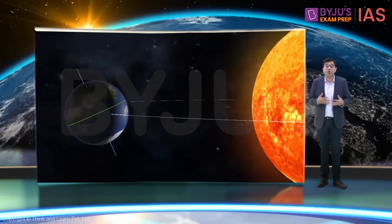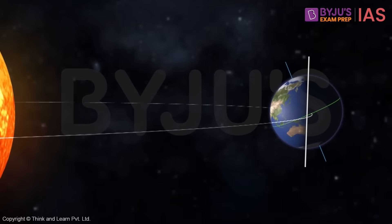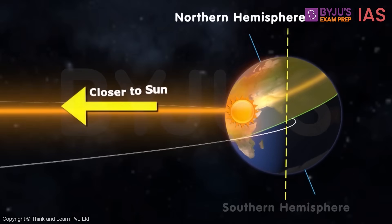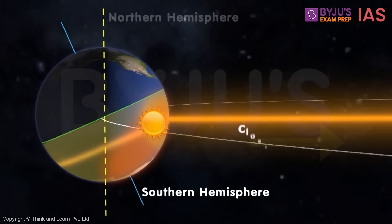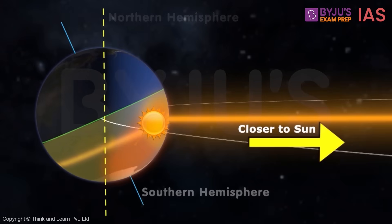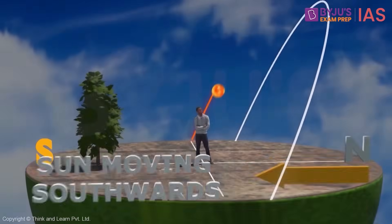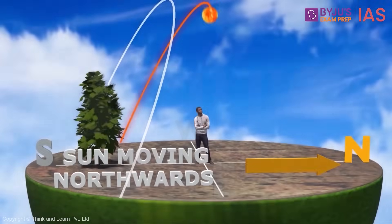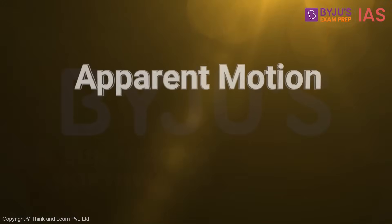Now we will study about a concept called the apparent motion of the sun. We know the earth's axis of rotation is tilted at an angle of 23.5 degrees and it revolves around the sun. In this position, the northern hemisphere is oriented or tilted towards the sun. So, if you are an observer on earth, you will feel that the sun has moved towards the south. As time passes, you will feel that it starts moving towards the north. This motion of the sun from the point of view of a person on earth is called the apparent motion of the sun.